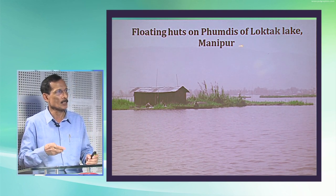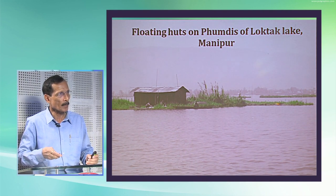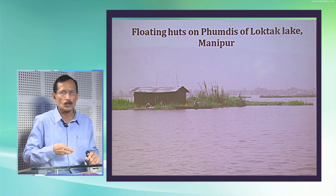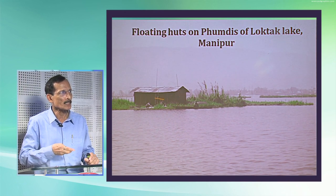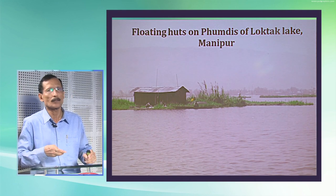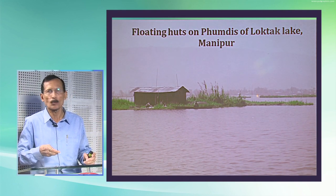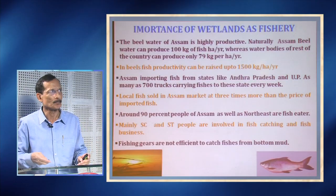One unique example, not from Assam but from Manipur's Loktak lake, involves floating plants that have become so thick that dwelling houses can be constructed on them. These are called Fumdis, and fishermen have made huts on the Fumdis — a unique feature of Loktak lake that also attracts many tourists.